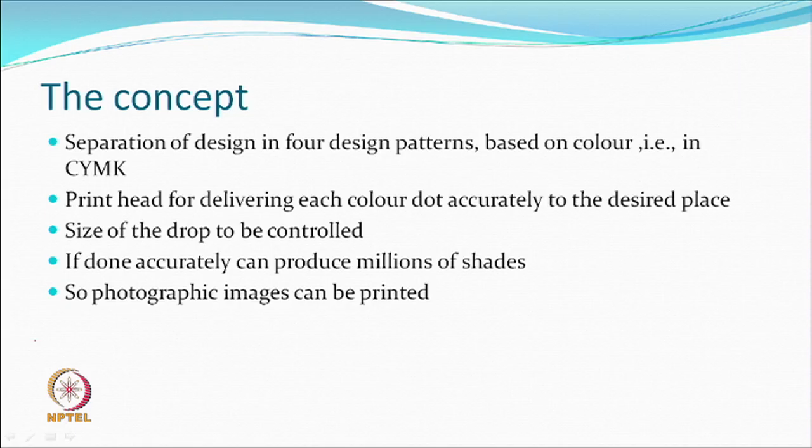If done accurately, millions of shades can be produced. You are not concerned about how to mix colours, and if you can ensure the drop size is very small and placed in a very small area without superimposing, only the image appears superimposed, not the individual drops. Colours remain as distinct entities and so a photographic image can be produced. Whether you want to produce a photographic image through inkjet is your choice — you may simply print a normal design with inkjet printing. The same possibility available in paper printing technologies can also be done on textiles.